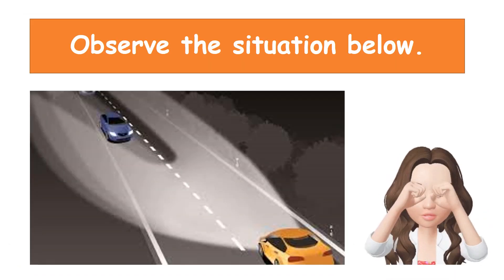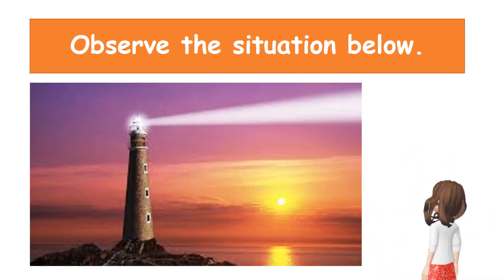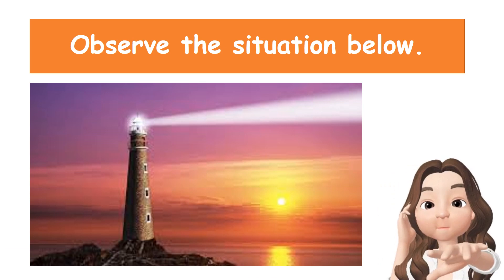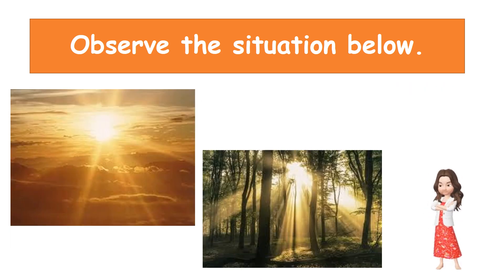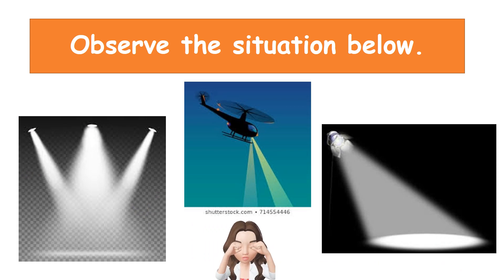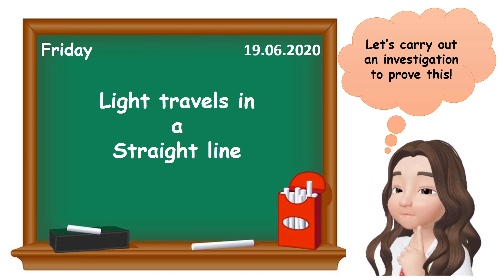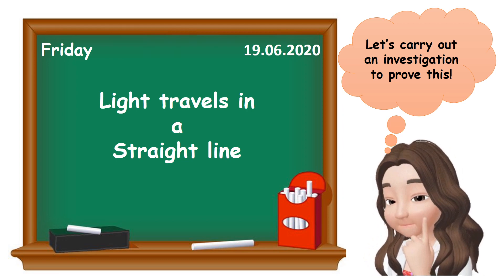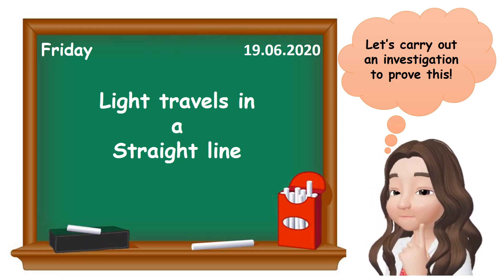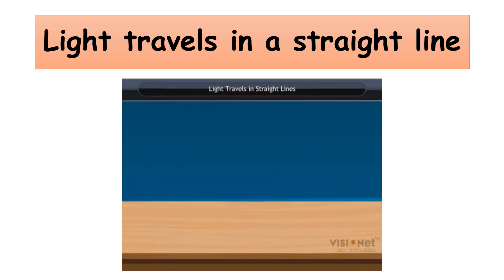Light travels in a straight line around us. All the examples above show that light travels in a straight line. Let us carry out an investigation to prove this. Light travels in straight lines.